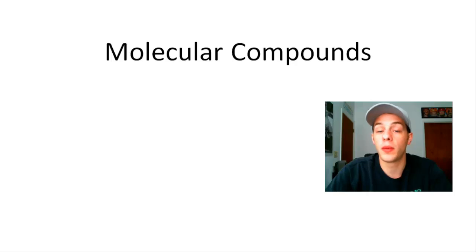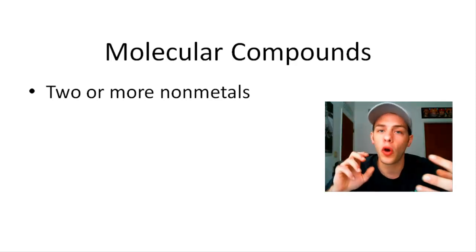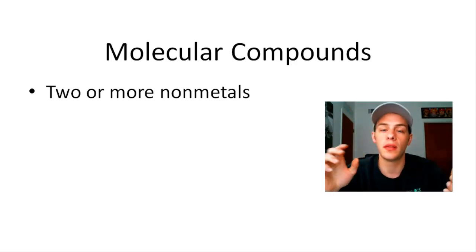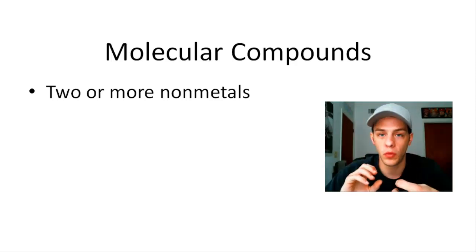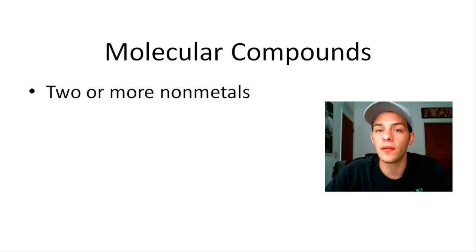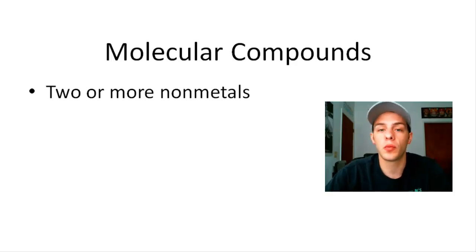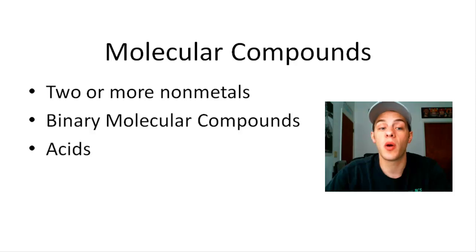With molecular compounds, we have two or more nonmetals. These nonmetals are joined together by covalent bonds, which means the atoms are sharing electrons with one another. What results is a collection of discrete entities that we call molecules. The molecular compounds we'll discuss in this video are binary molecular compounds, composed of two different nonmetals. We're also going to talk about acids.